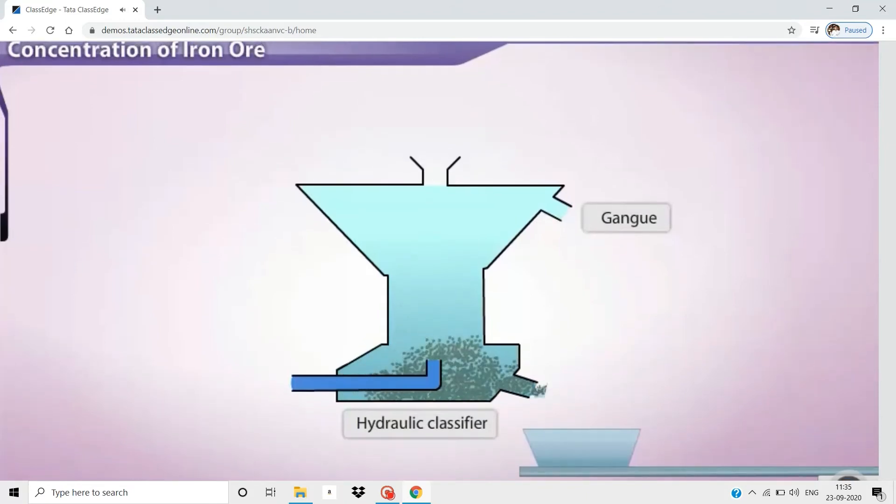The concentrated ore still has volatile impurities in it, so it has to be processed further. However, it is taken for calcination, which is the second stage in the extraction process.